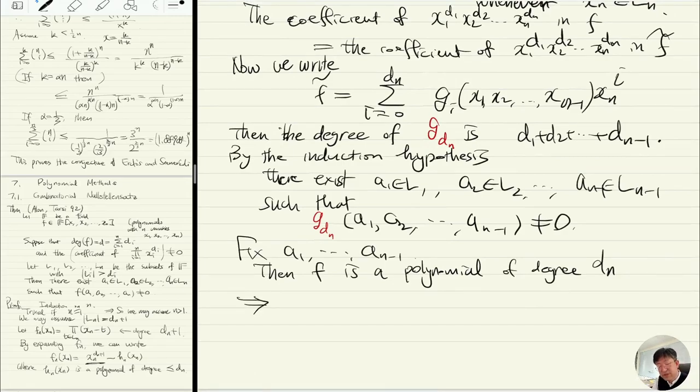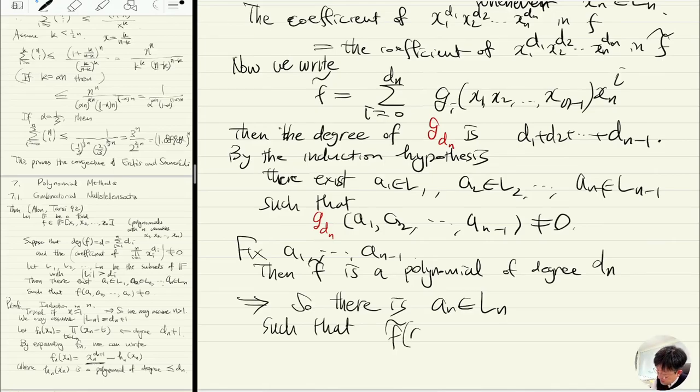The number of roots is at most dn, and it's a nonzero polynomial because the coefficient of the highest order term is nonzero. So there is an in Ln such that f-tilde(a1, a2, ..., an) is nonzero.